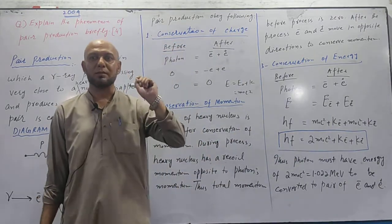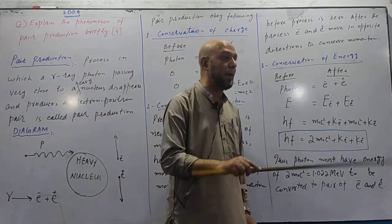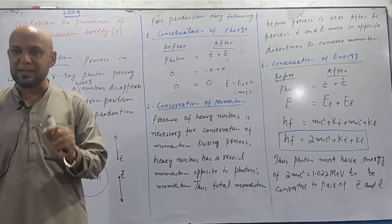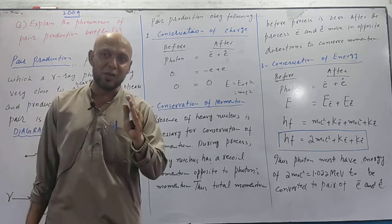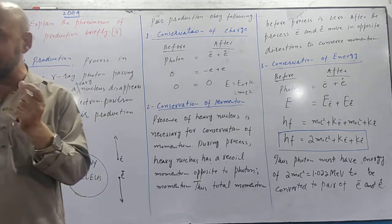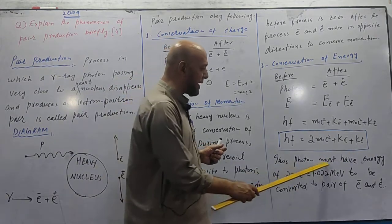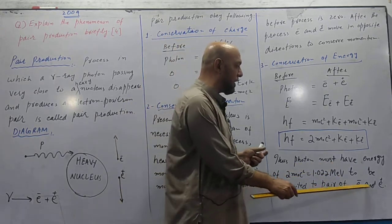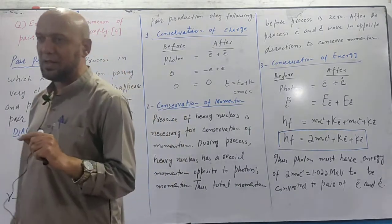Now we pass one photon near nucleus. If its energy is less than 2 m nought c square - 2 m nought c square is rest mass of electron plus rest mass of positron - this much energy is needed for electron and positron to be produced. If less energy, will the process happen? No. Because this is the minimum energy needed to create electron and positron. Thus photon must have energy of 2 m nought c square. 2 m nought c square energy is 1.022 mega electron volt to be converted to pair of electron and positron. At least this much energy in hf is needed. Then pair production will happen, otherwise pair production won't happen.